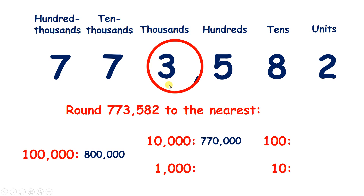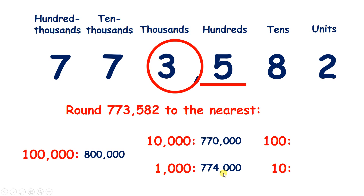Now to the nearest 1,000, if we look next door we have 5 — so we have 5 or more, so we need to raise the score: that 3 becomes a 4, and that gives us 774,000.